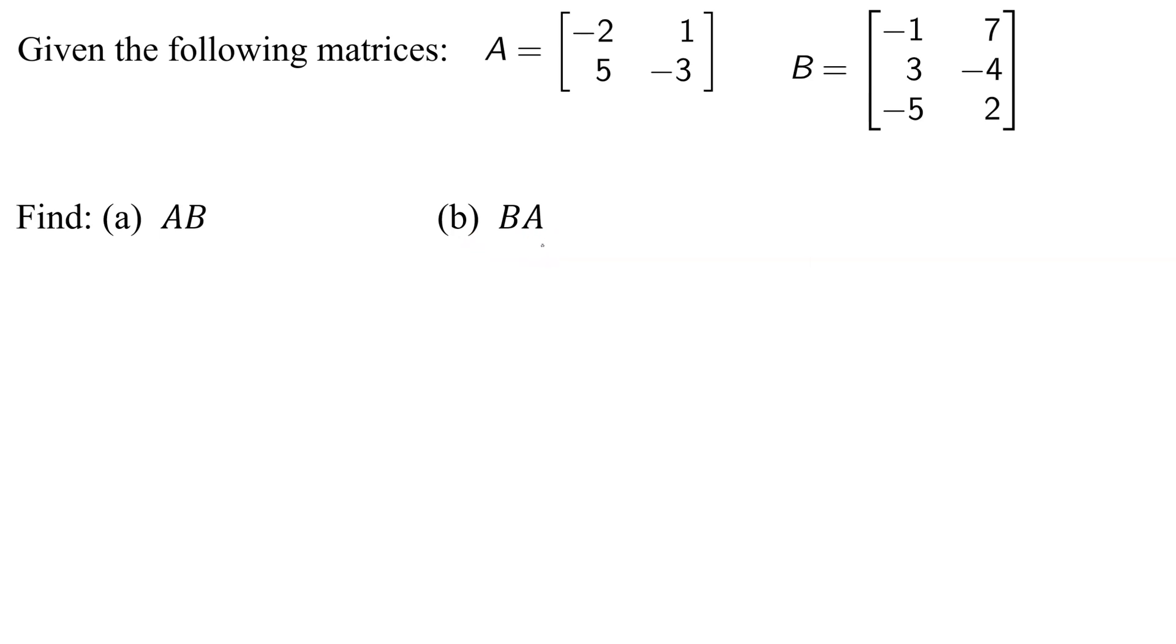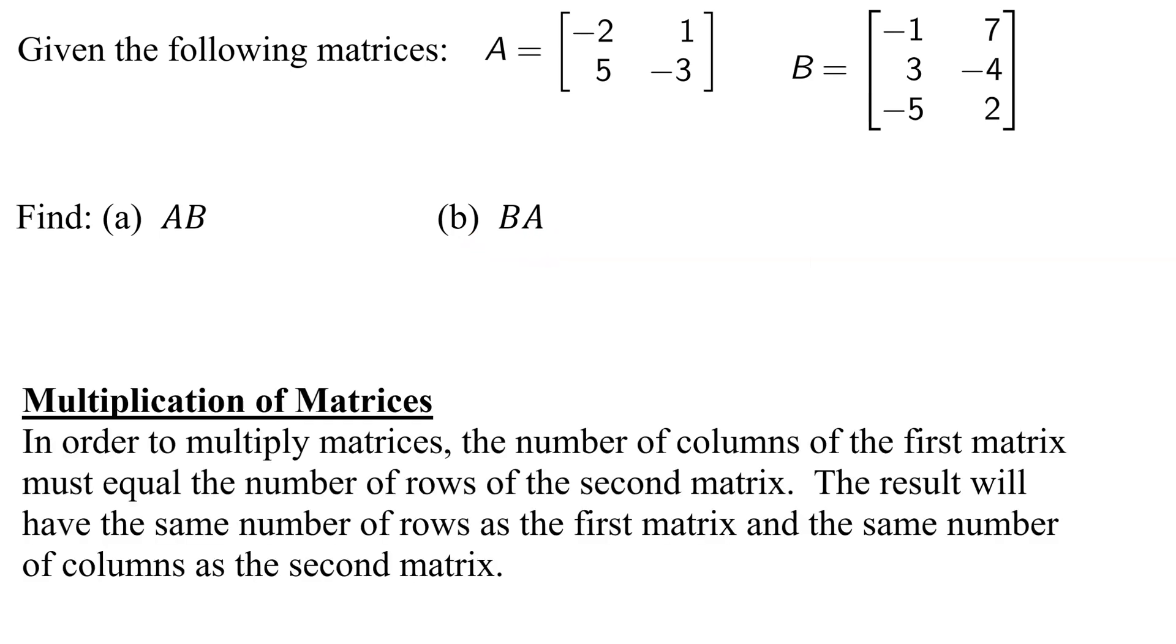So let's quickly review matrix multiplication. In order to multiply matrices, the number of columns of the first matrix must equal the number of rows of the second matrix. If this is not true, then we cannot multiply our two matrices.